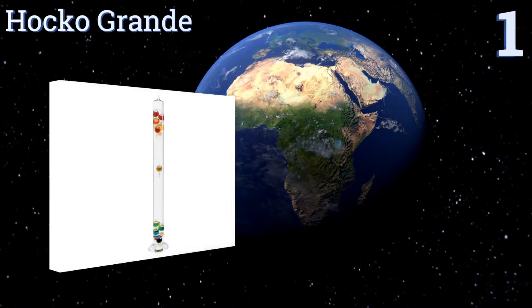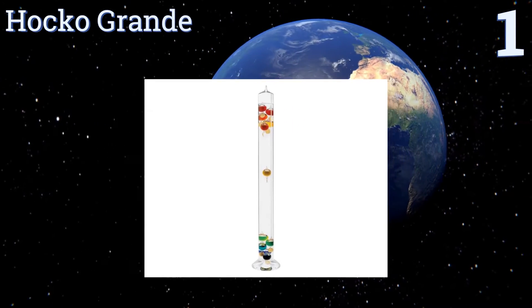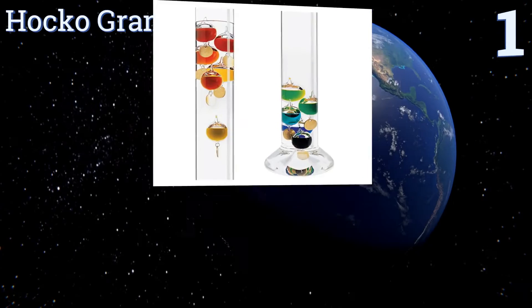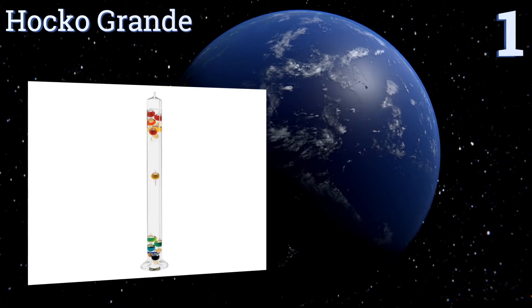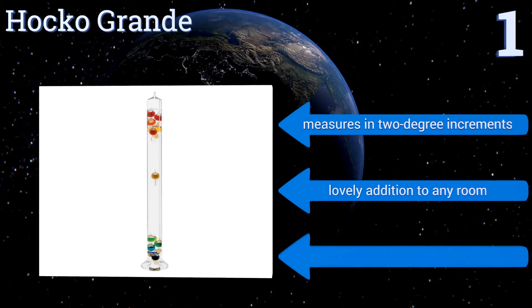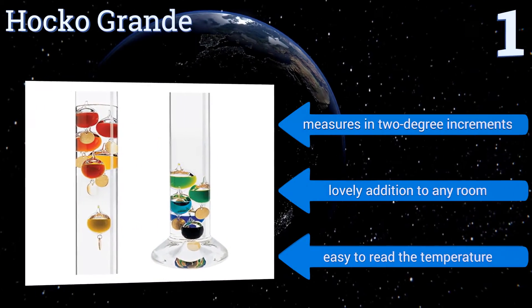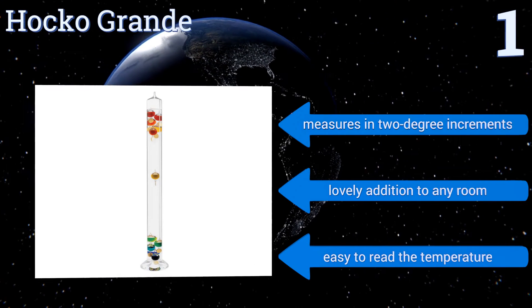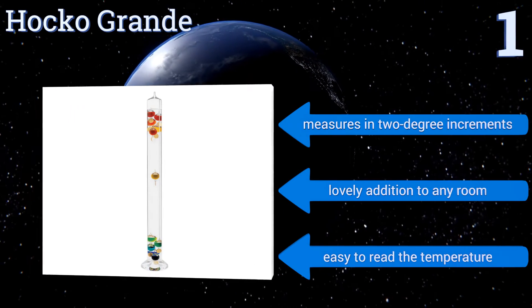And taking the top spot on our list, the 38-inch tall HOKO GRAND is sure to impress all who look at it. It measures 3 inches in diameter, and has a wide 6.5-inch base that keeps it stable at all times. This floor-standing model has 11 colored, fluid-filled glass globes. It measures in 2-degree increments, and makes a lovely addition to any room. It's easy to read the temperature too.